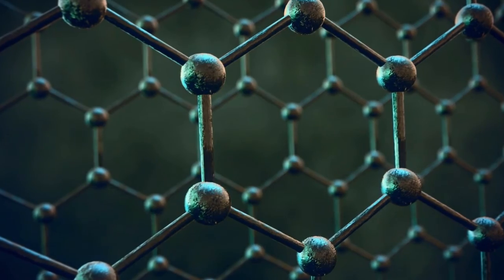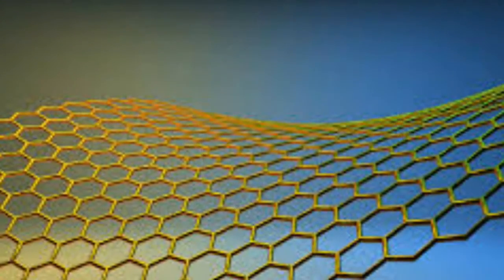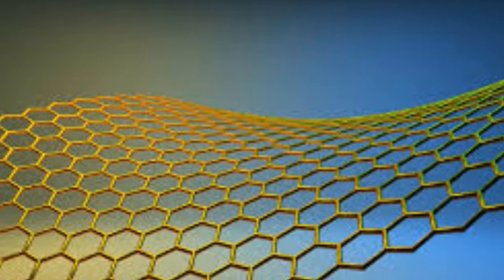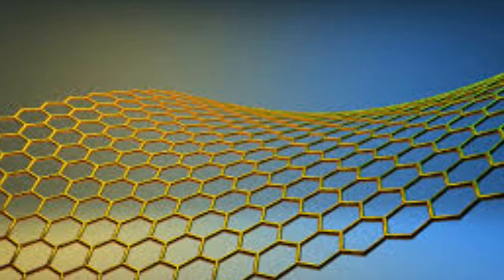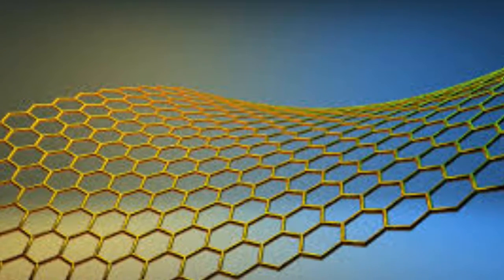Graphene is very strong, but it can break suddenly. We found that graphene oxide, however, will deform first before eventually breaking.